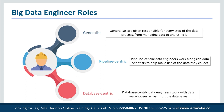There are typically three kinds of roles that a big data engineer has to assume. First, we have the generalist, typically found on small teams or in small companies. In this setting, data engineers wear many hats as one of the few data-focused people in a company, and are often responsible for each step of the data process from managing data to analyzing it. Next, we have pipeline-centric data engineers, often found in mid-size companies. These engineers work alongside data scientists to help make use of the data they collect.